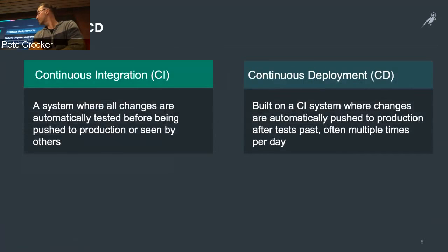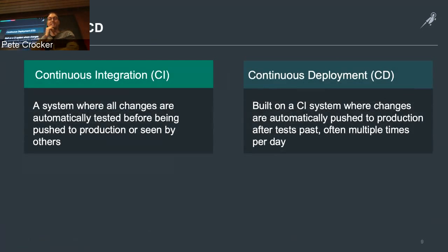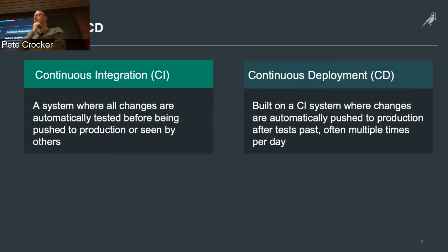Continuous integration and continuous deployment — I'm assuming most of you know the concepts here. Continuous integration is essentially spinning up a test environment that mimics the production environment so you can actually test things before pushing them into production. From a networking standpoint, very few people actually take advantage of this — the networking side of the house is a few years behind on bringing this to their skill set.